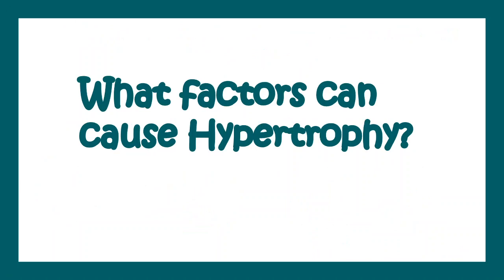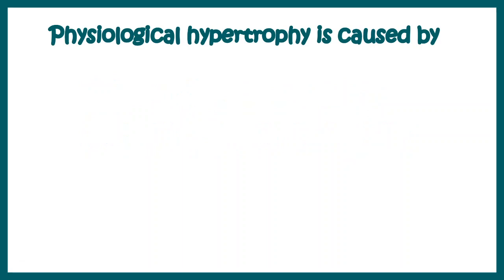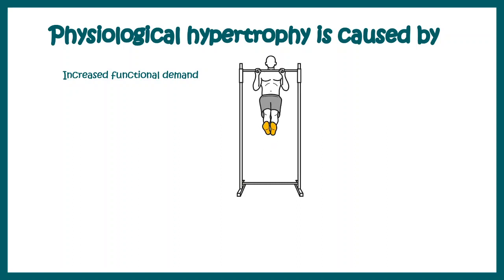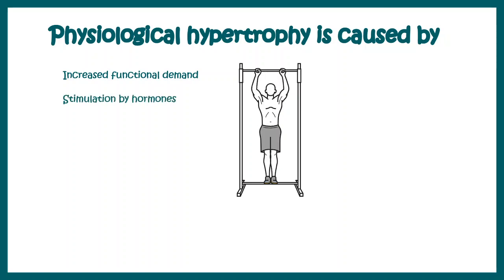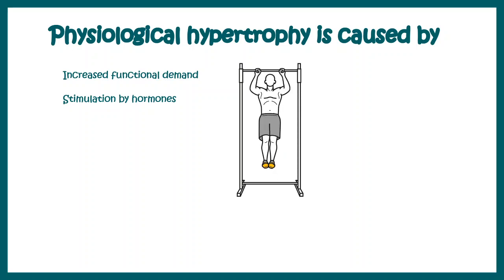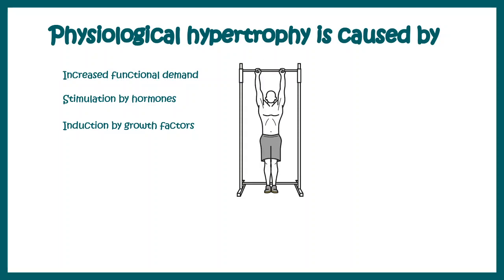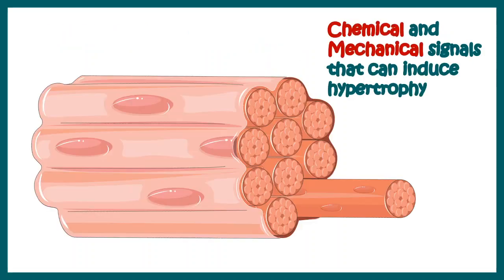Now let's talk about what factors can cause hypertrophy. The physiological factors include increasing functional demand — simply, you are increasing your load in the gym or lifting heavier objects. Also, stimulation by several hormones such as growth hormones and steroid hormones can cause hypertrophy. In sports, there is a malpractice of injecting specific hormones to achieve hypertrophy. Additionally, induction by growth factors or growth factor agonists can all lead to an increase in size of a particular organ, such as muscle, leading to hypertrophy.